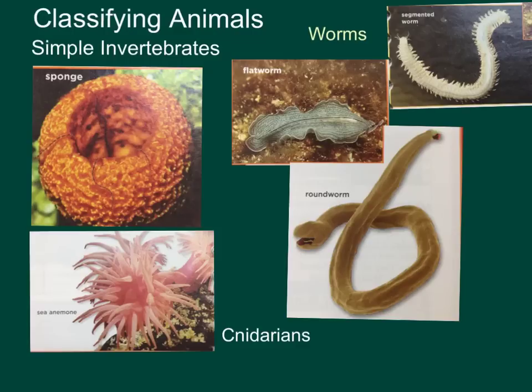The sponge's body structure is kind of arranged around a tunnel-like canal. It's filled with a lot of tiny pores or holes. The word pore gives sponges their phylum name, which is porifera. All members of the phylum porifera live in water. Sponges are simple — they have two cell layers. That's why they're the lowest of the lower invertebrates.